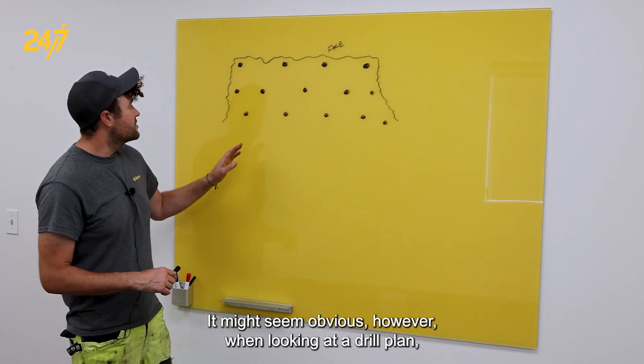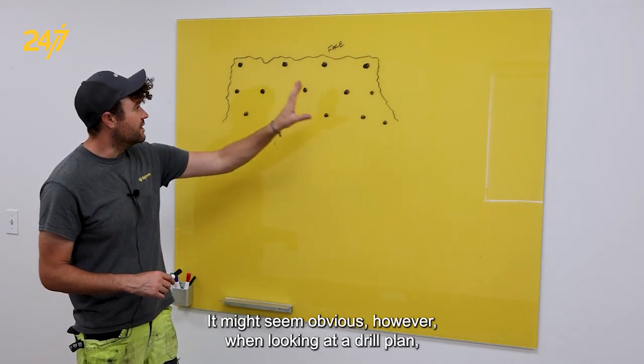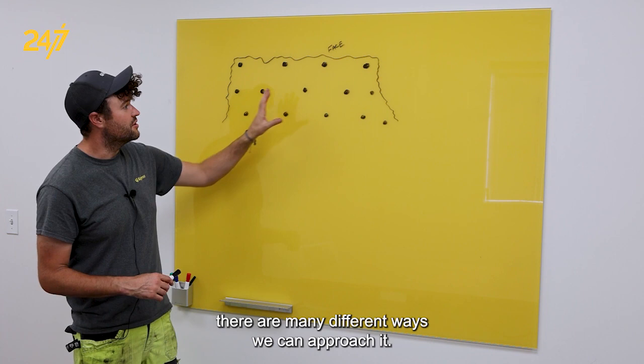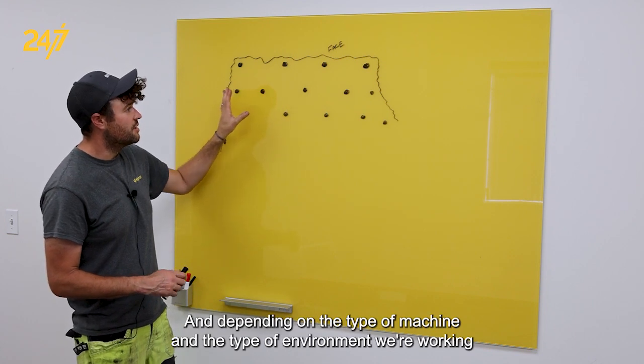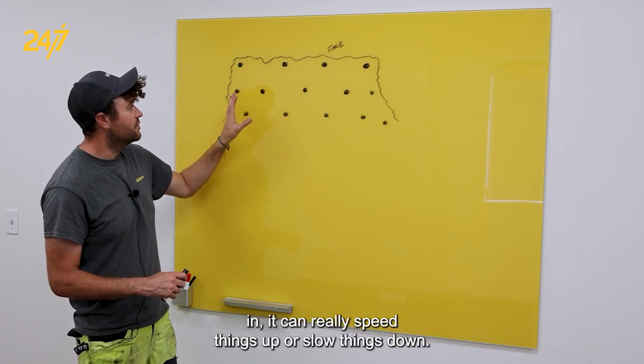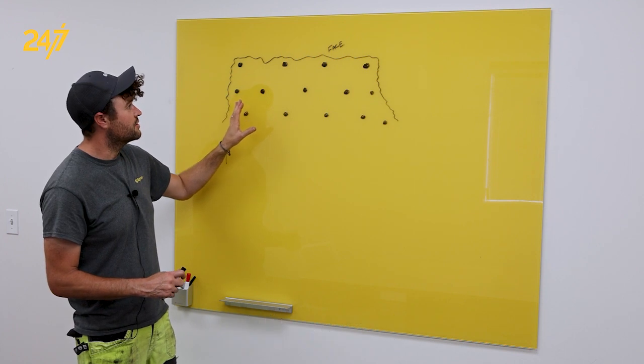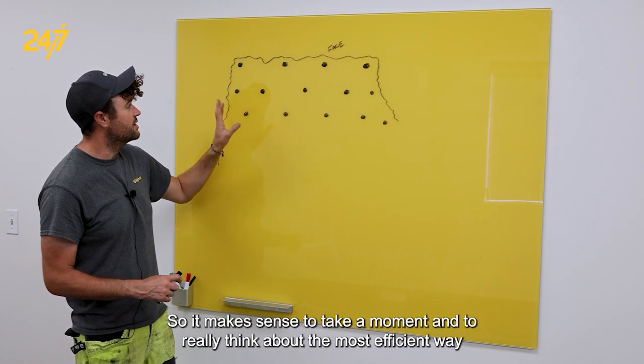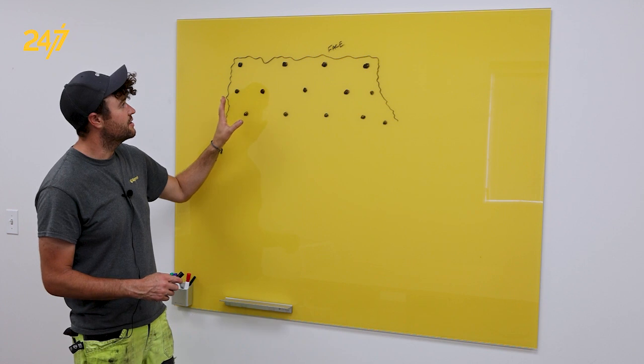It might seem obvious, however, when looking at a drill plan, there are many different ways we can approach it, and depending on the type of machine and the type of environment we're working in, it can really speed things up or slow things down. So it makes sense to take a moment and really think about the most efficient way to approach.